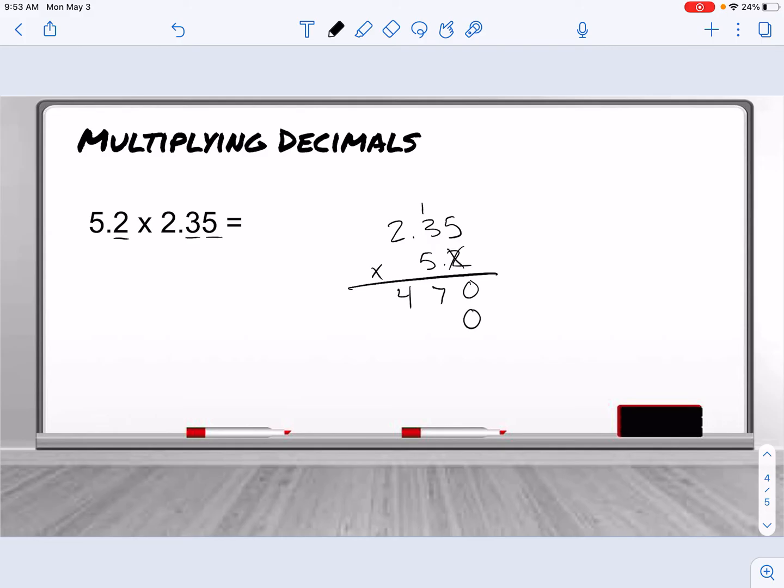So I put a 0, and then I can start multiplying. 5 times 5 is 25. 5 times 3 is 15, plus 2 is 17. 5 times 2 is 10, plus 1 is 11. We can add it all together.